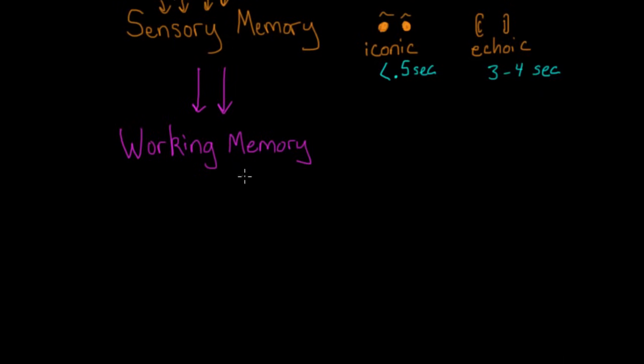Working memory capacity works a little bit differently. It's not defined by time so much as quantity. Just remember the magic number seven. Your working memory can hold about seven plus or minus two pieces of information at a time, so about five to nine. This does vary a little bit based on how complicated those pieces of information are, how old you are, that kind of thing.